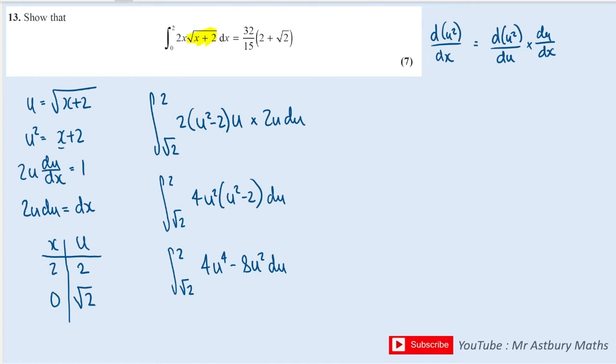Now time to integrate. Up the power, divide by the new power. Upping the power to 5 and dividing by 5 gives 4/5 u to the 5.